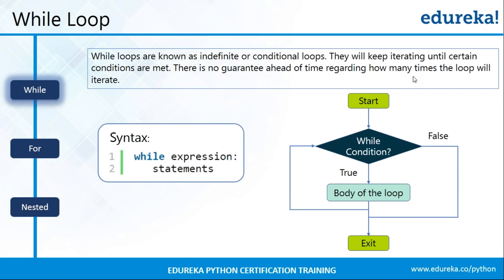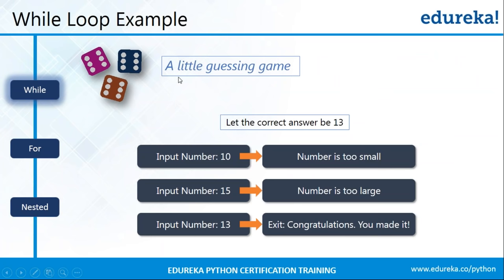Now I'll increase the complexity with a guessing game example. A random number is generated between 0 to 20, and you need to guess it. If your guess is less than the random number it prints 'number is too small'; if greater, it prints 'number is too large'; and the moment you guess correctly, you exit the while loop and win the game. This is a perfect example for while loop because we don't know how many iterations are required to guess correctly.